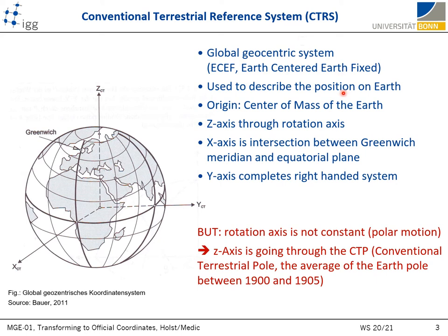In such a system, the position of a point attached to the solid surface of the Earth has coordinates which undergo small variations over time due to geophysical effects such as tectonics or tidal deformations. Its origin is in the center of the Earth's masses. The principal X-axis points towards the intersection of the Greenwich meridian and the equator. The Z-axis coincides with the Earth's rotational axis defined by the conventional terrestrial pole, which is defined by the average Earth pole position between years 1900 and 1905. And the Y-axis completes the right-handed coordinate system.